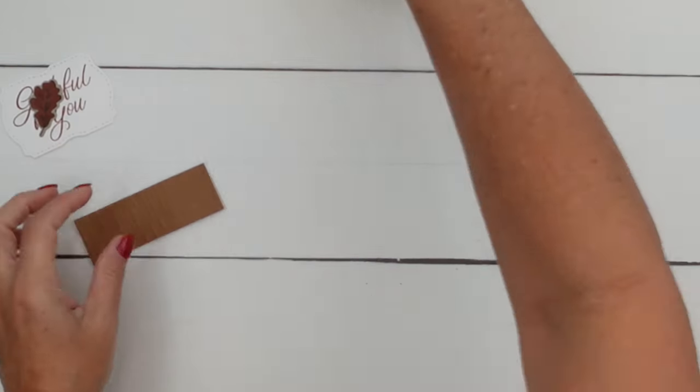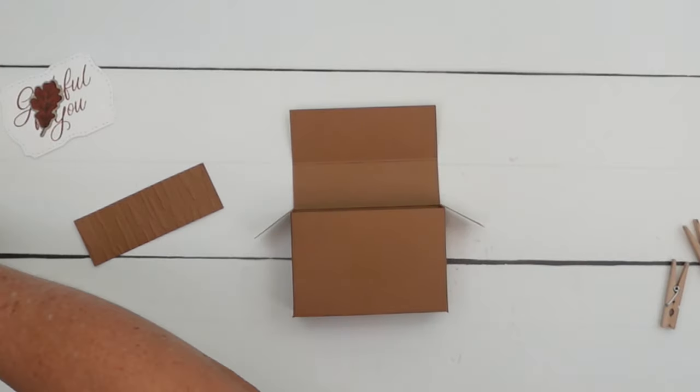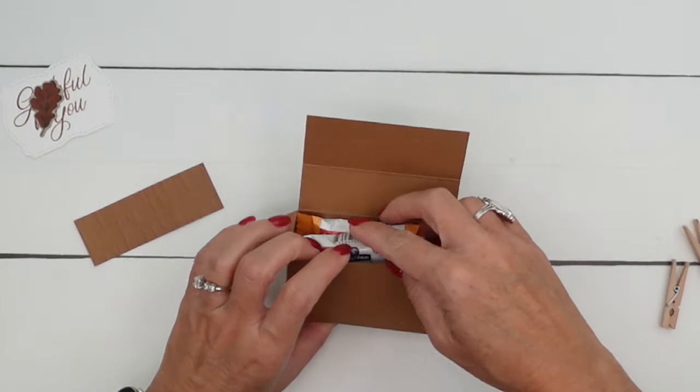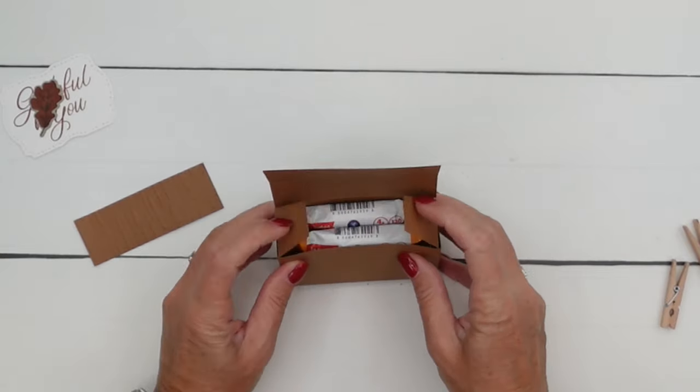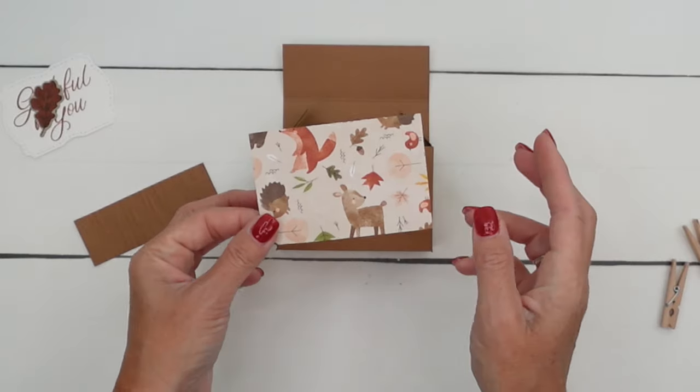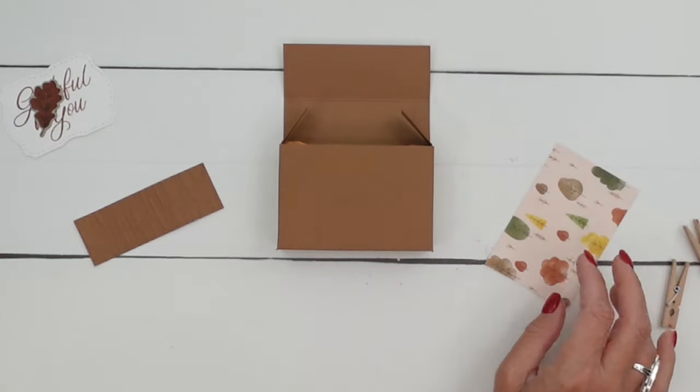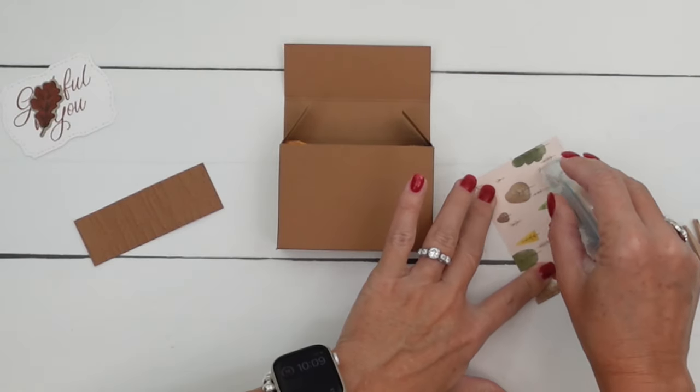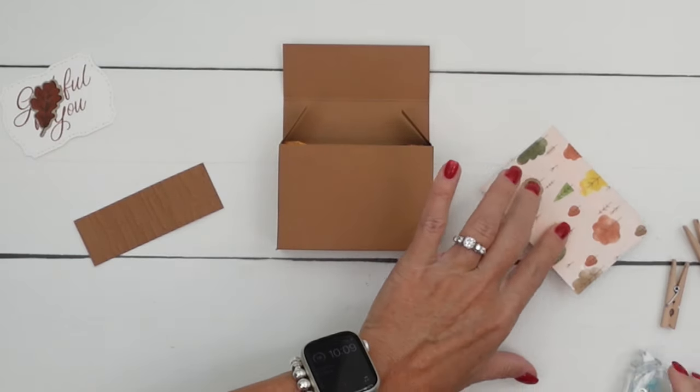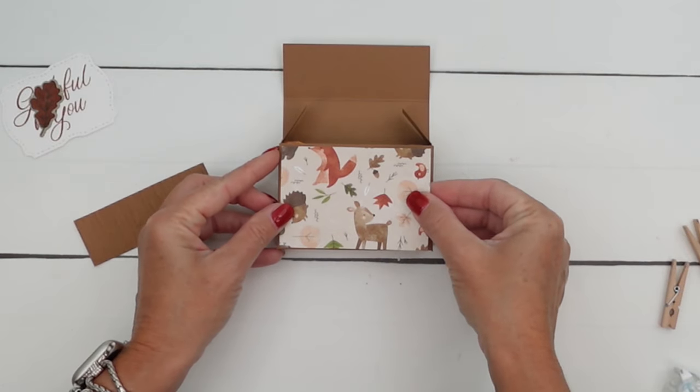I think we're ready to put it all together. Let's take these off and put in our pumpkin spice wafers. Those are good with coffee. It'll be a nice little afternoon pick me up. And this paper that I used, I used the trees on the first project, but I think this time I'm going to use the other side with the cute little animals.